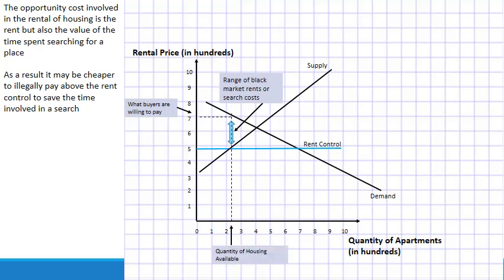The quantity of housing available at the rent control is limited — let's call it 225 units. People are willing to pay more money so they don't have to stand in line to gain access to housing. This is how the black market emerges as a result of search activity.